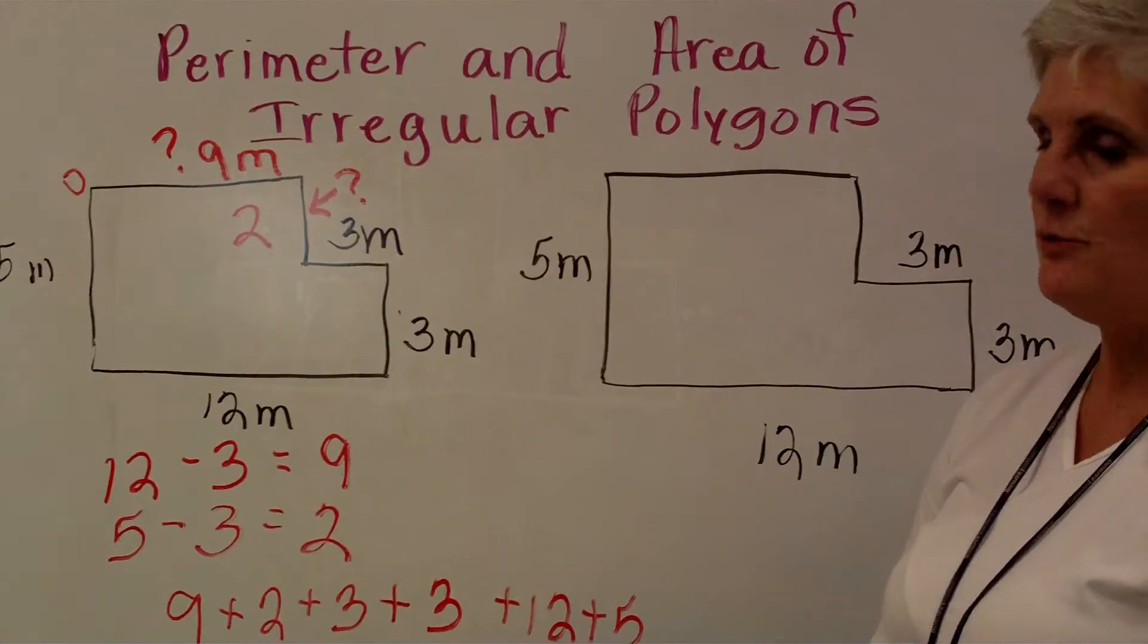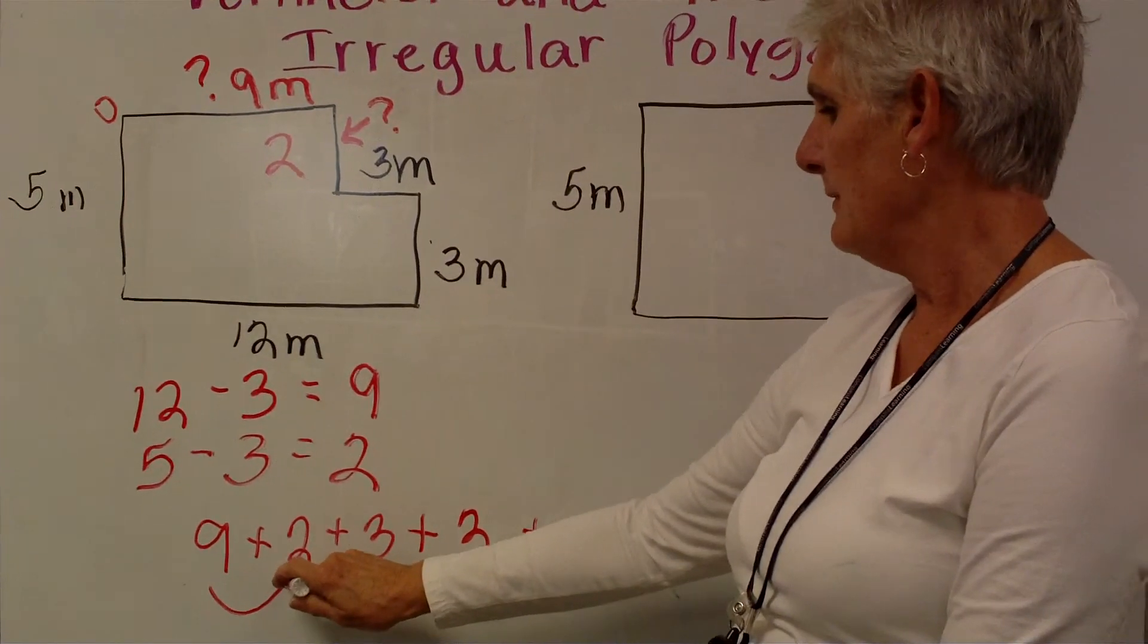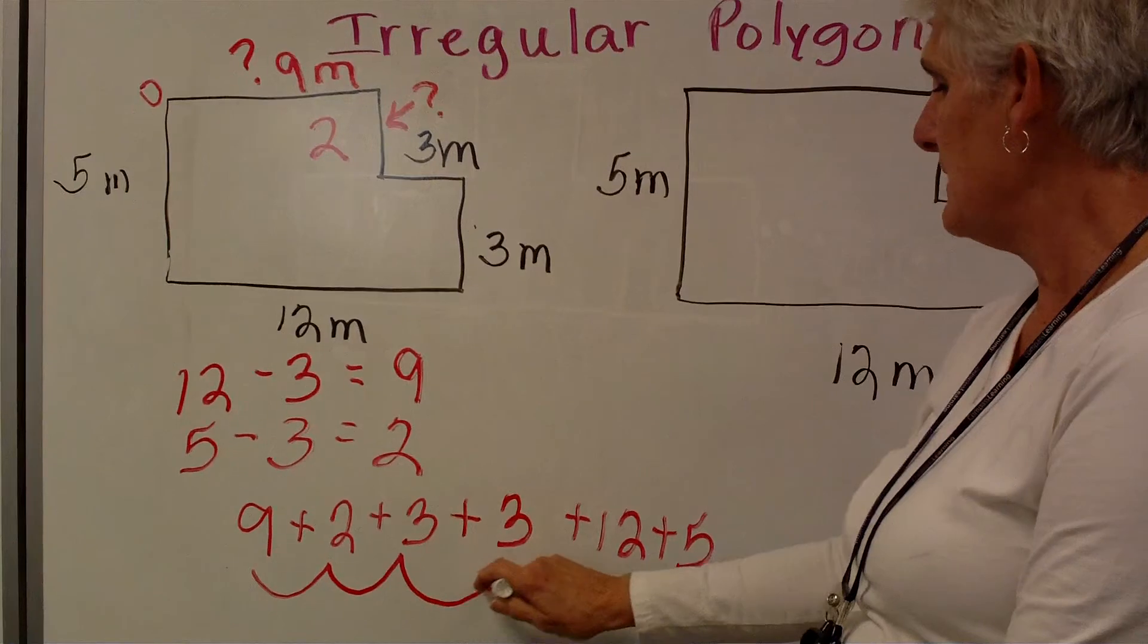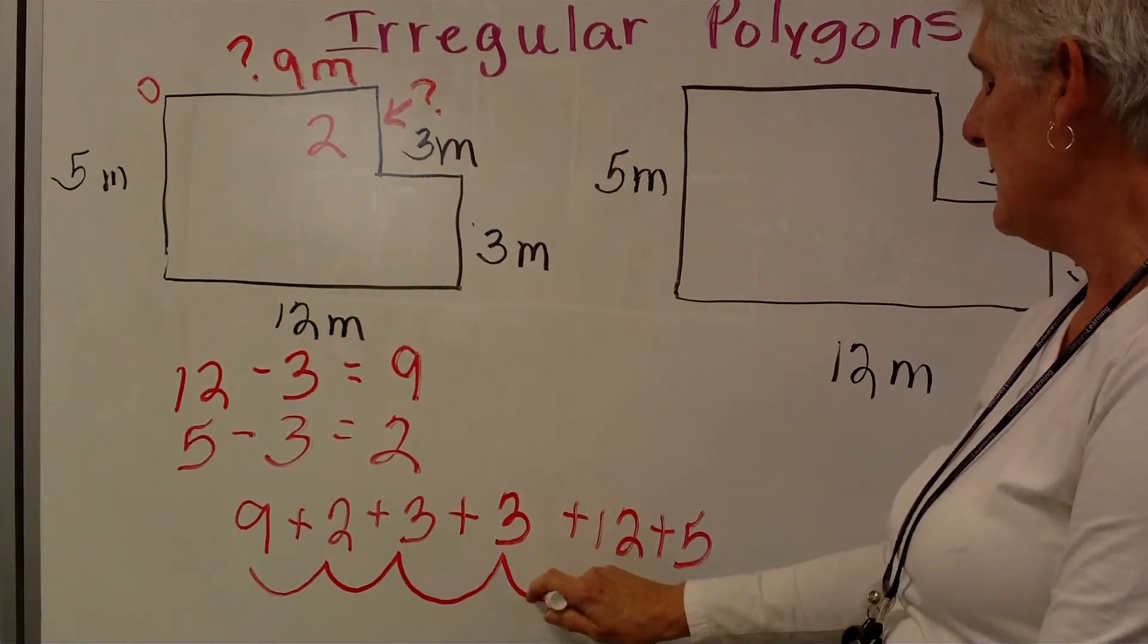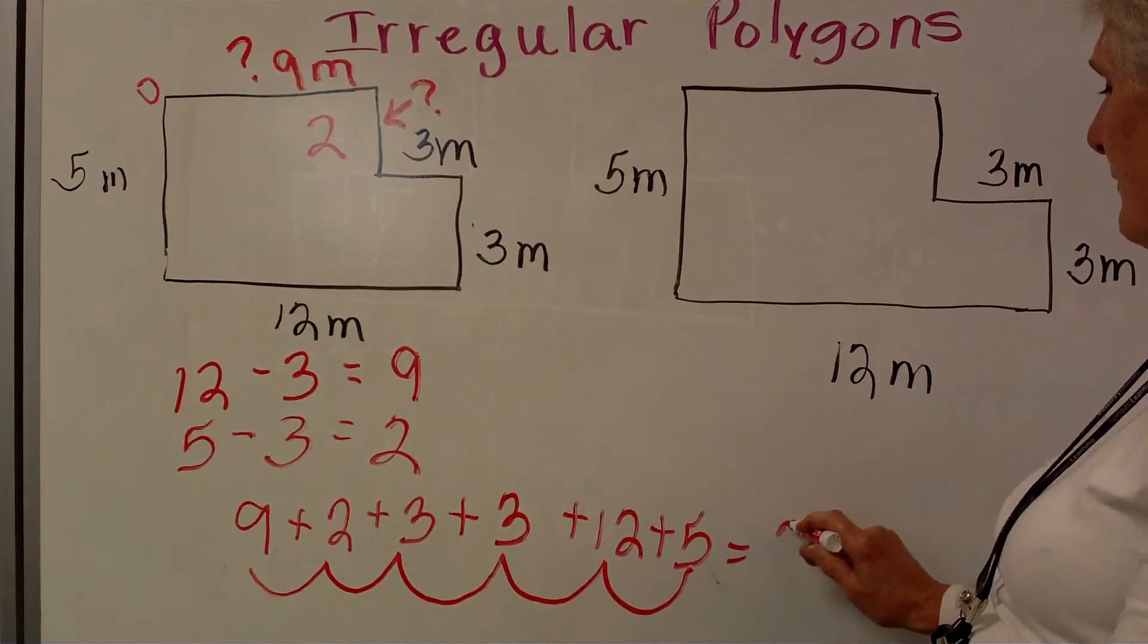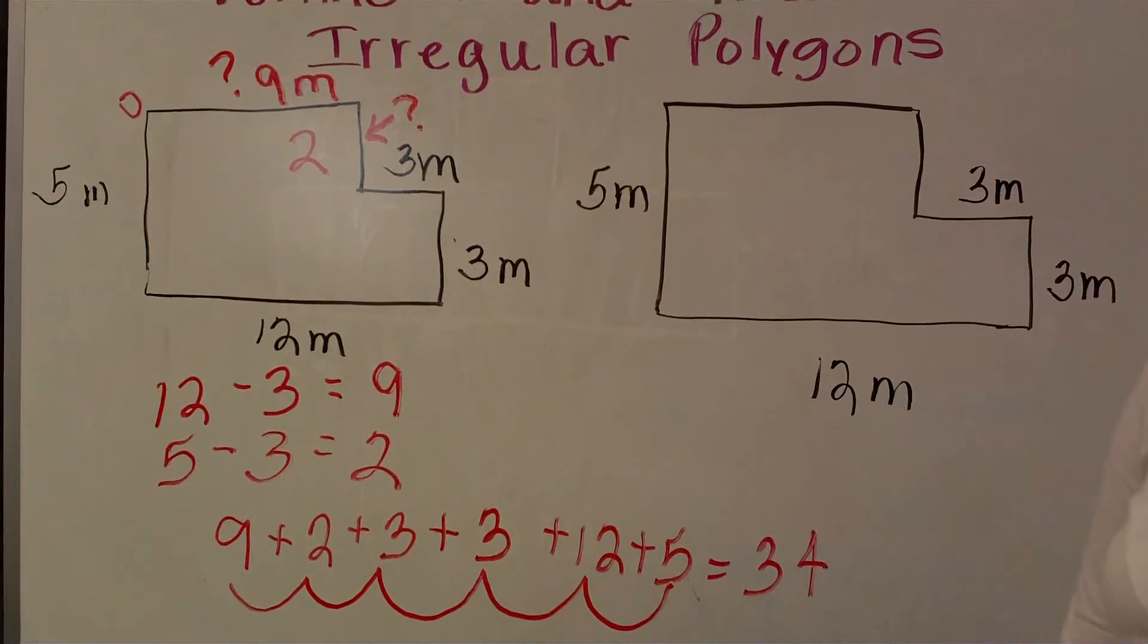Always important to do it twice. Let's add them together. 9 and 2 is 11. 11 and 3 is 14. 14 and 3 is 17. 17 and 12 is 29, 29 and 5 is 34.